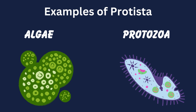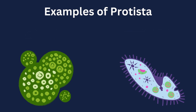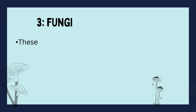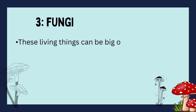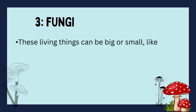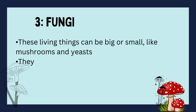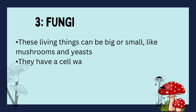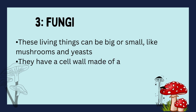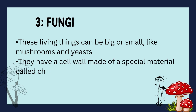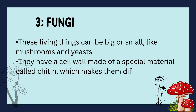Now let's talk about fungi. These living things can be big or small, like mushrooms and yeasts. They have a cell wall made of a special material called chitin. Chitin makes them different from other groups.